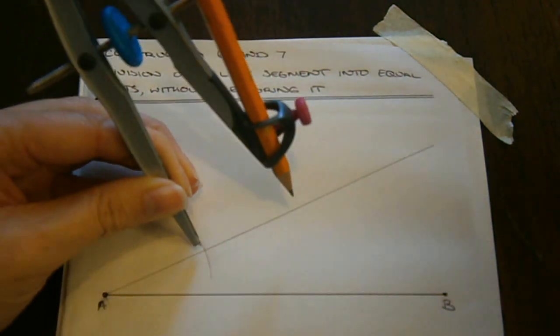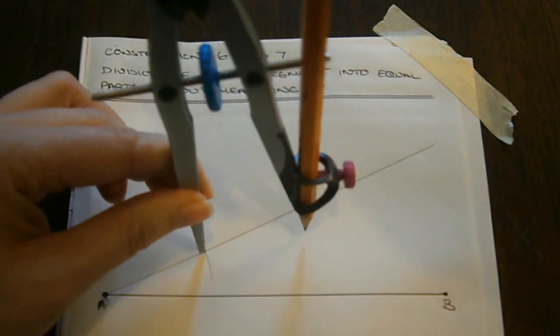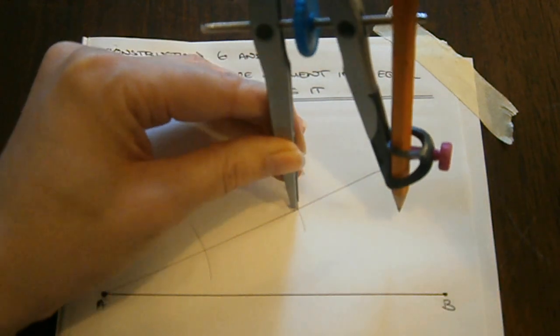We take our compass and we place the point on the intersection point between the arc and the line, and we draw a new arc. And we do the same again.